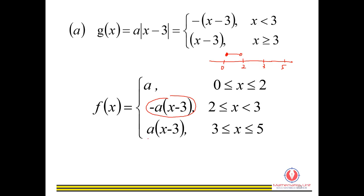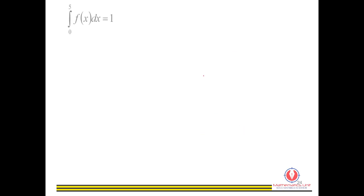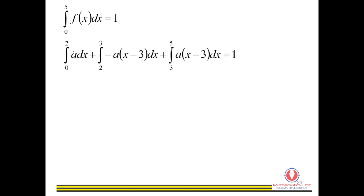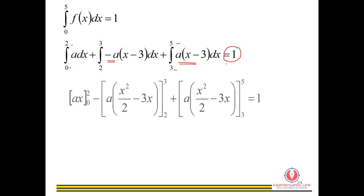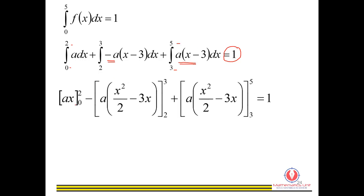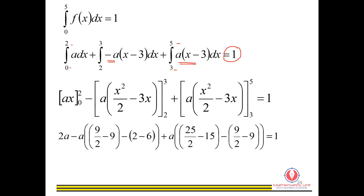To find the value of a, we integrate all three intervals separately with their respective functions. From 0 to 2 the function is a, from 2 to 3 the function has the negative sign, and from 3 to 5 the function has the positive sign. Since the total probability must equal 1, the sum of all three integrals equals 1.